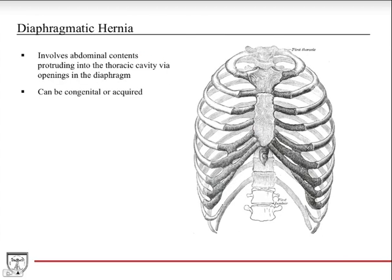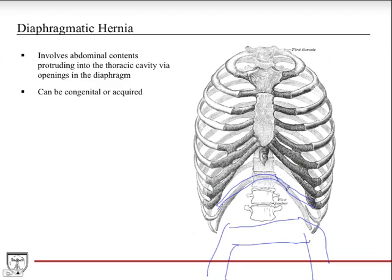Another clinical correlate is diaphragmatic hernia. The diaphragm sits at the inferior thoracic aperture, and if there's a break in the diaphragm, bowel contents can herniate up into the thoracic cavity. That can affect the lungs, breathing, and potentially the heart. This can be either congenital — seen in infants — or acquired, typically due to trauma in adults.